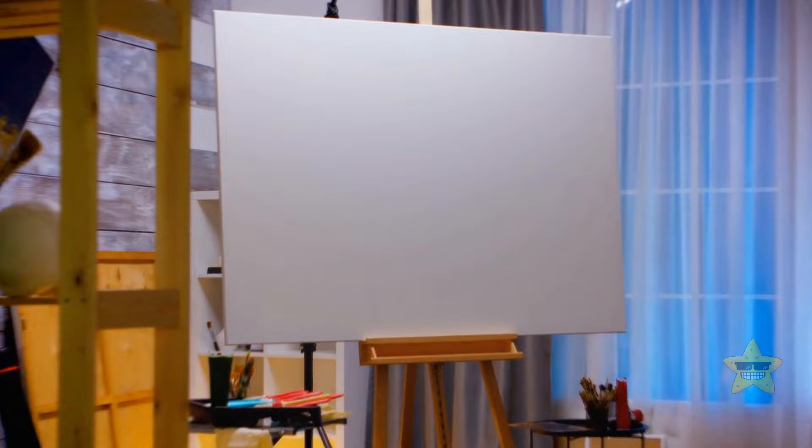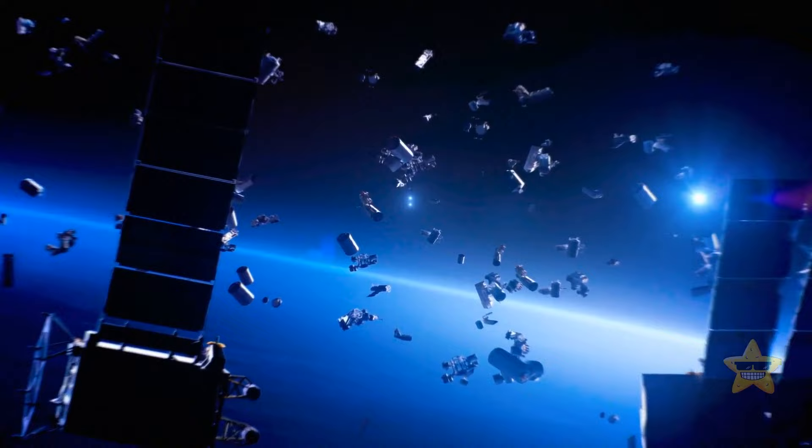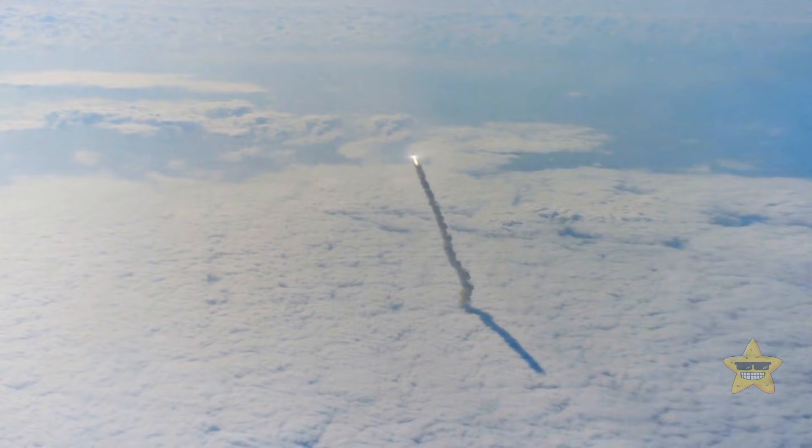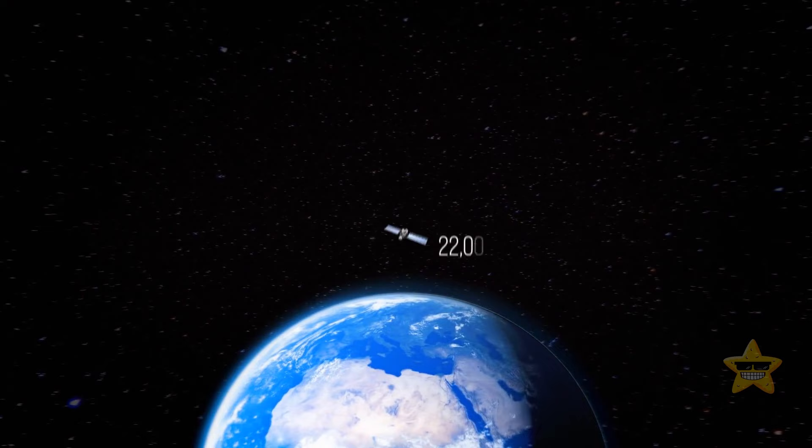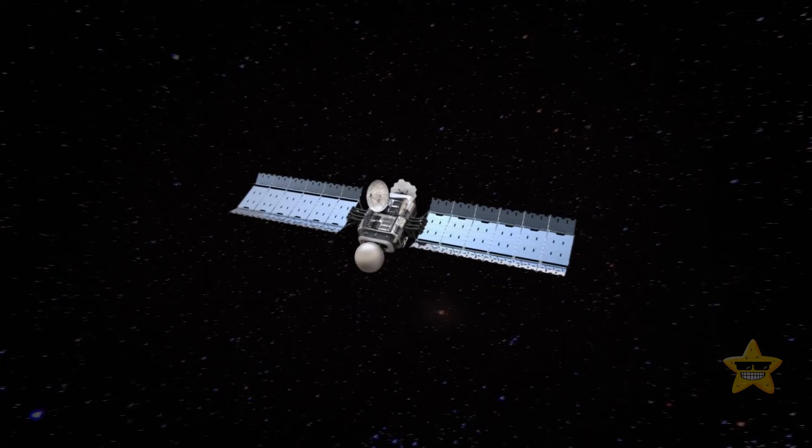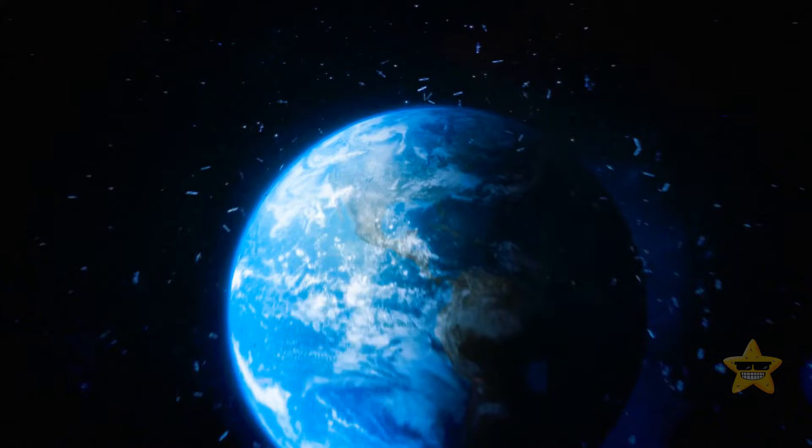So here's the deal with space junk. It's not just about sending stuff up into the atmosphere. It's also about how far away we send it. You see, when satellites are sent over 22,000 miles into the atmosphere, it becomes a real problem to retrieve them and bring them back to Earth. And that leads to even more space junk floating around up there.